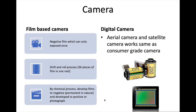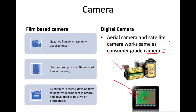In digital cameras — like satellite cameras, DSLRs, SLRs, and mobile cameras — we have sensors instead of film. When light falls on the sensor, it excites photons which generate voltage and ultimately electricity, and this is stored as a digital number. We will discuss this in more detail later.